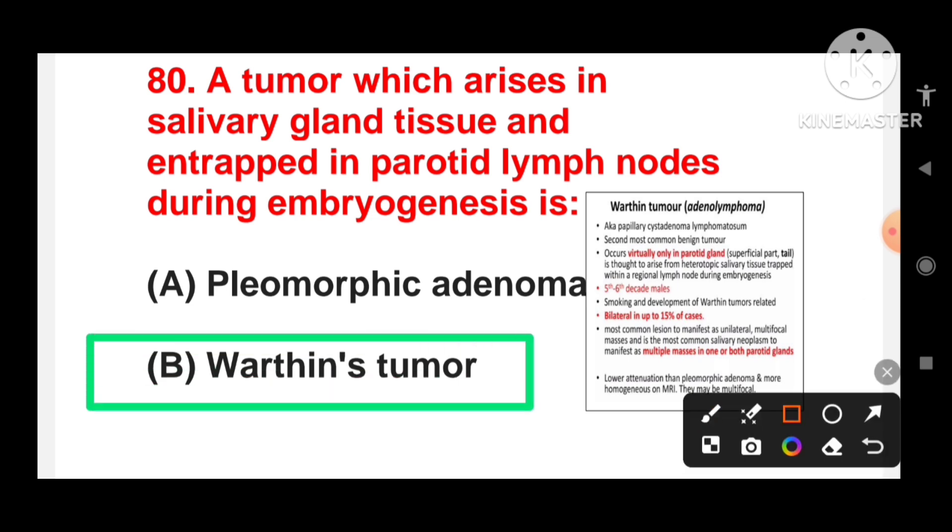Warthin's tumor, also known as papillary cystadenoma lymphomatosum, is the second most common benign tumor. It occurs virtually only in parotid gland, in the superficial part and tail part, and it arises from the heterotopic salivary tissue trapped within a regional lymph node during embryogenesis. It occurs in the fifth to sixth decade in males. Smoking and development of Warthin's tumor are related compared to non-smokers, and it is bilateral in up to 15% of cases.